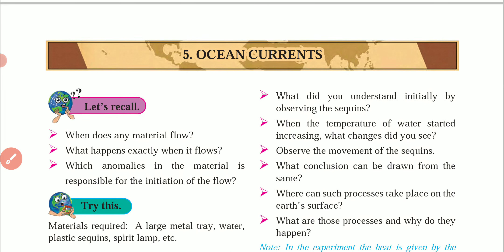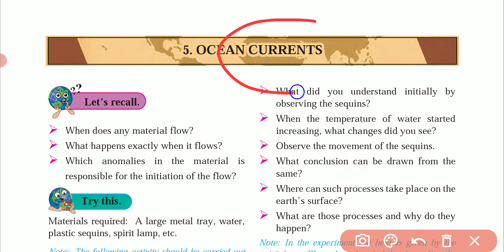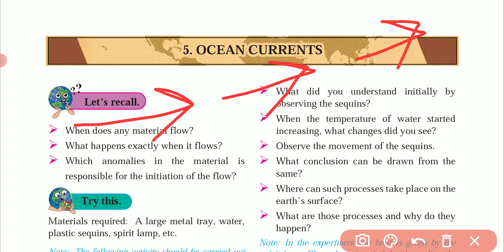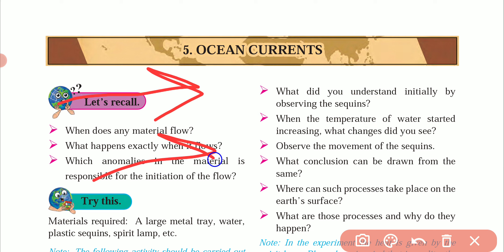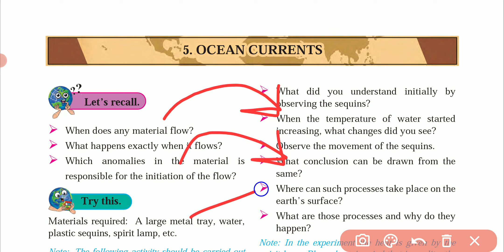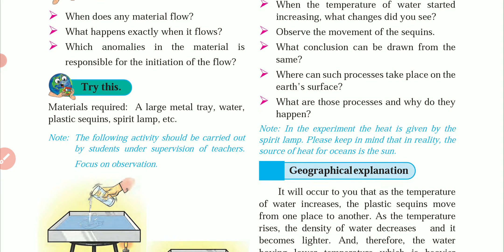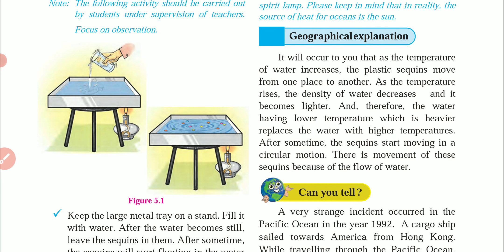Students, don't get confused — you will hear the word 'current' many times in your life. Yes, that current which charges our fans, TVs, and mobile phones. But don't mix that with this. The similarity between both types of current is just that they flow in a particular direction. In wire current, atoms and energy move. In ocean current, water moves. Water can move due to various reasons, which we will see further in this chapter.